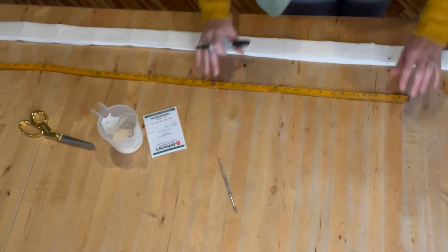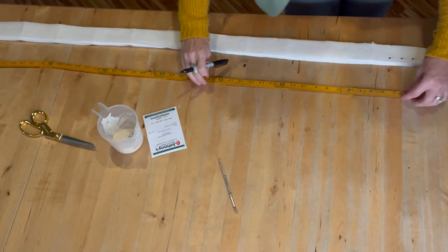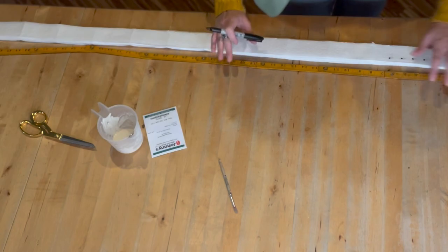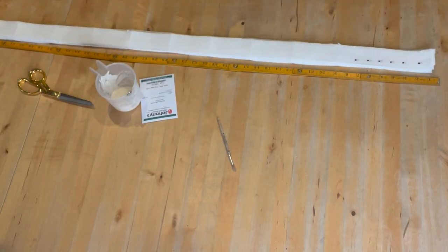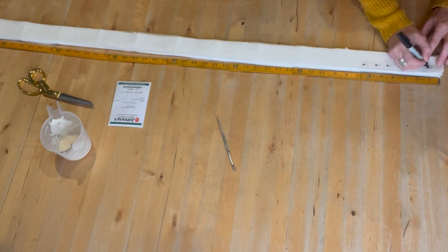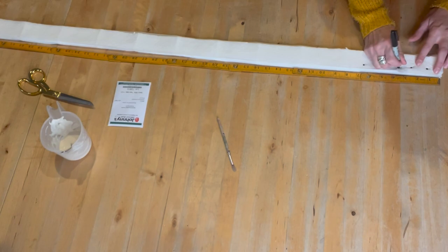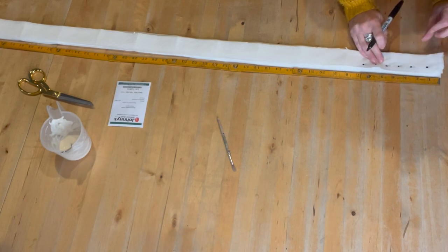So once you've stacked both of your stacks on top of each other, we're just going to line our ruler up and mark out an inch all the way down. You can decide to eyeball it if you want. I like using a Sharpie because then it will go through multiple layers at a time.